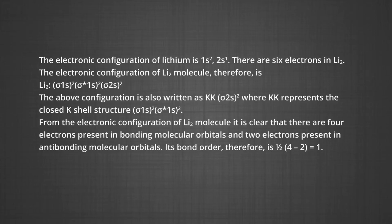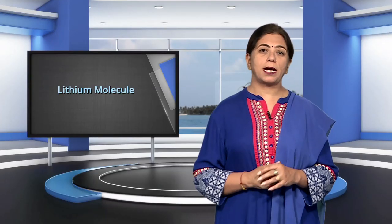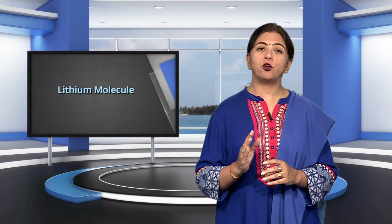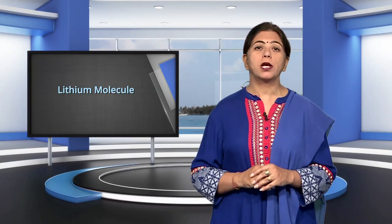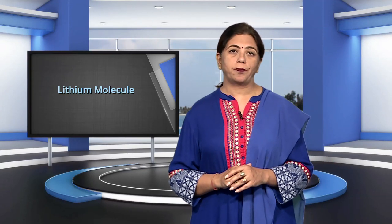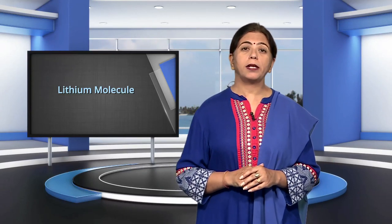From the electronic configuration of the lithium molecule, there are 4 electrons in bonding molecular orbitals and 2 electrons in anti-bonding molecular orbitals. Its bond order is ½(4 − 2) = 1, meaning lithium molecule is stable. Since it has no unpaired electrons, it should be diamagnetic. Indeed, diamagnetic lithium molecules are known to exist in the vapor phase.